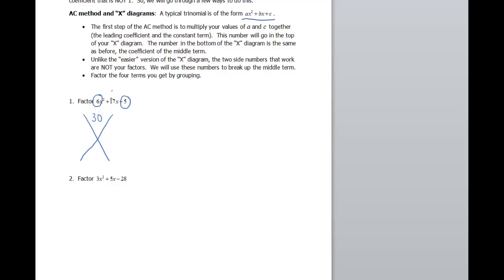The middle number here, my middle coefficient which is 17, is going to go into the bottom part of it. I need two numbers that will multiply to 30 and add to 17. That will be 15 and 2, or 2 and 15, order does not matter. I typically put the smaller one first, but that's just me.